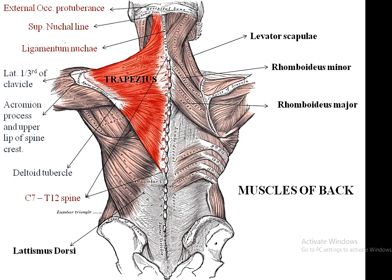So the attachment with the clavicle is in the form of insertion, acromion process, upper lip of crest of spine, and deltoid tubercle. The actions of the trapezius are: shrugging of the shoulder (elevation of the scapula), retraction of the scapula, steadying the scapula, and helping in abduction of the arm beyond 90 degrees.